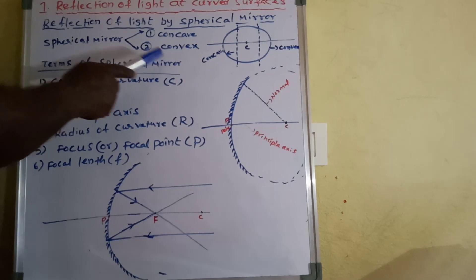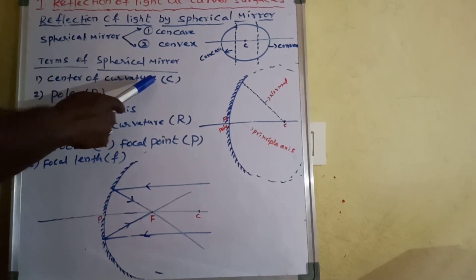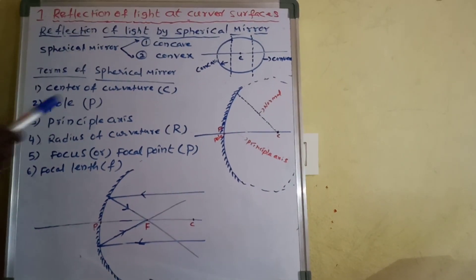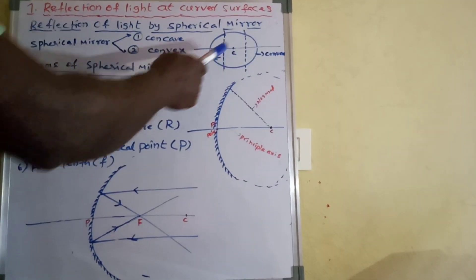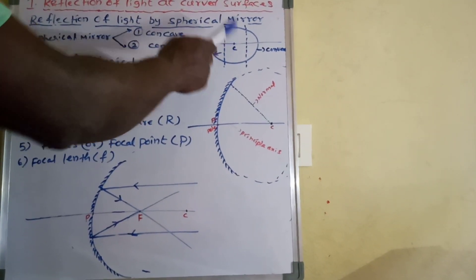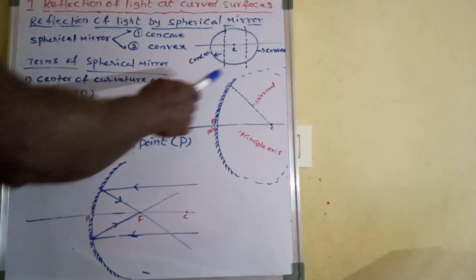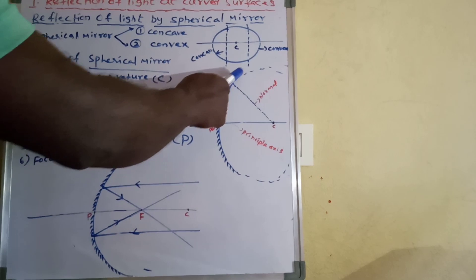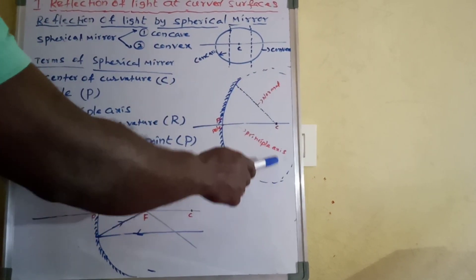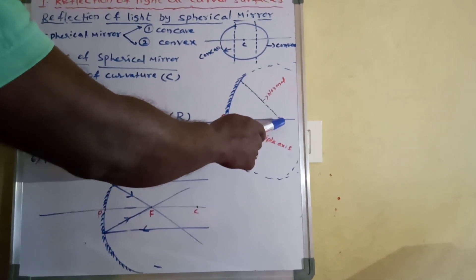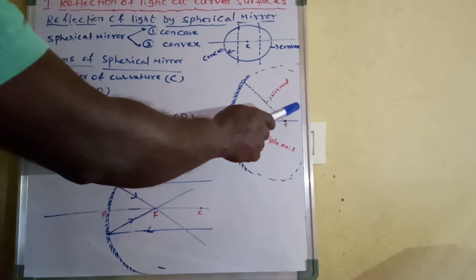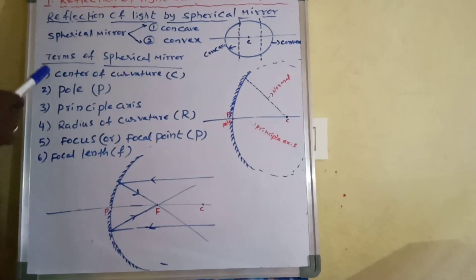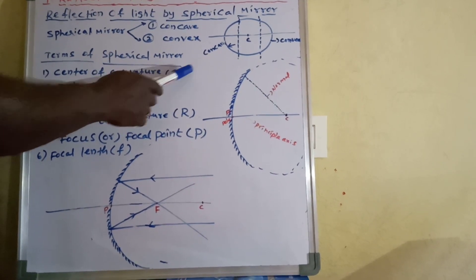Now the terms of spherical mirrors. The first one is the center of curvature, C. The center of the hollow sphere of glass is called the center of curvature. Here, with the concave mirror being a part of the sphere, this center of the sphere is called the center of curvature, represented by the letter C.